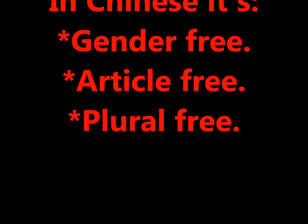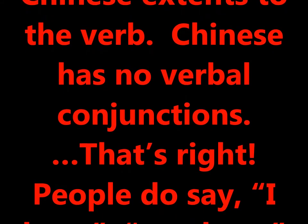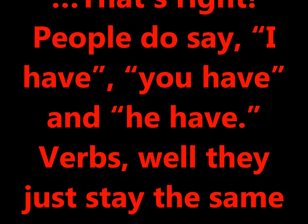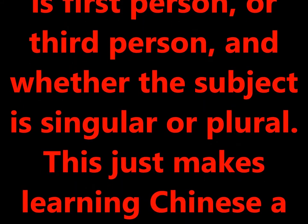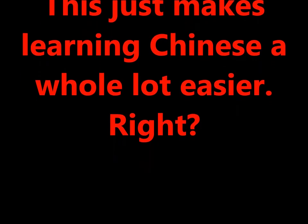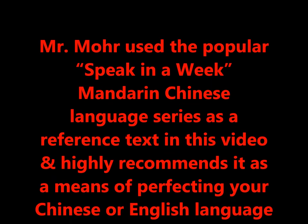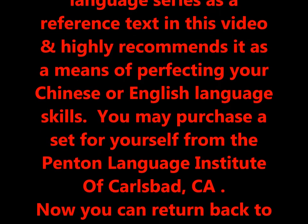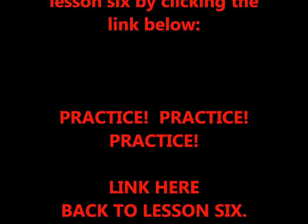Chinese characters and tones can be really difficult, but here's the easy part: Chinese has no verb conjugations. People say 'I have,' 'you have,' and 'he have' — verbs stay the same whether the subject is first person or third person, singular or plural. This makes learning Chinese a whole lot easier.